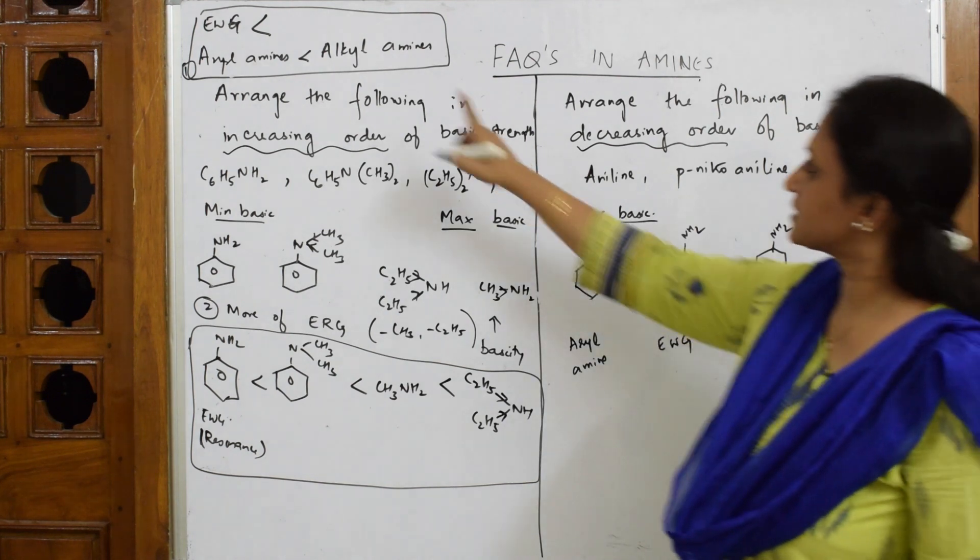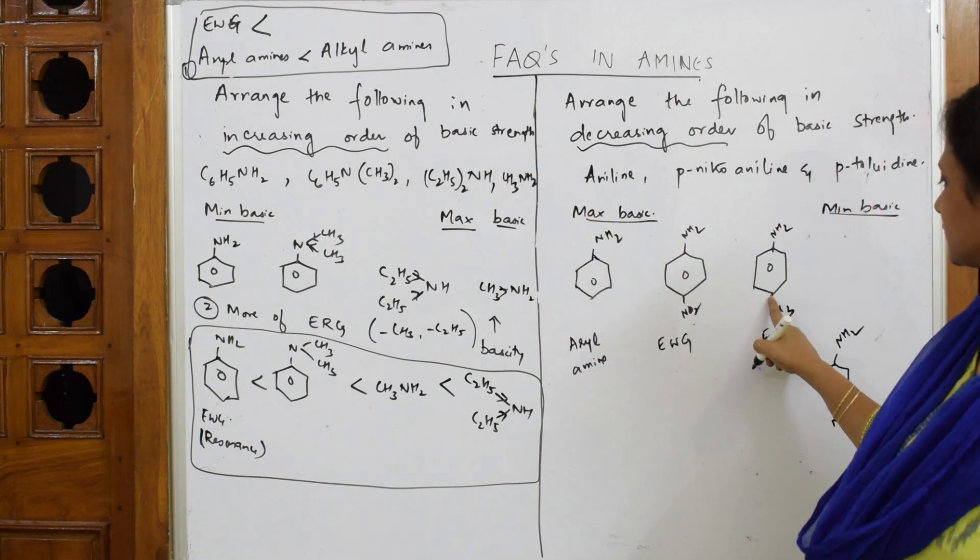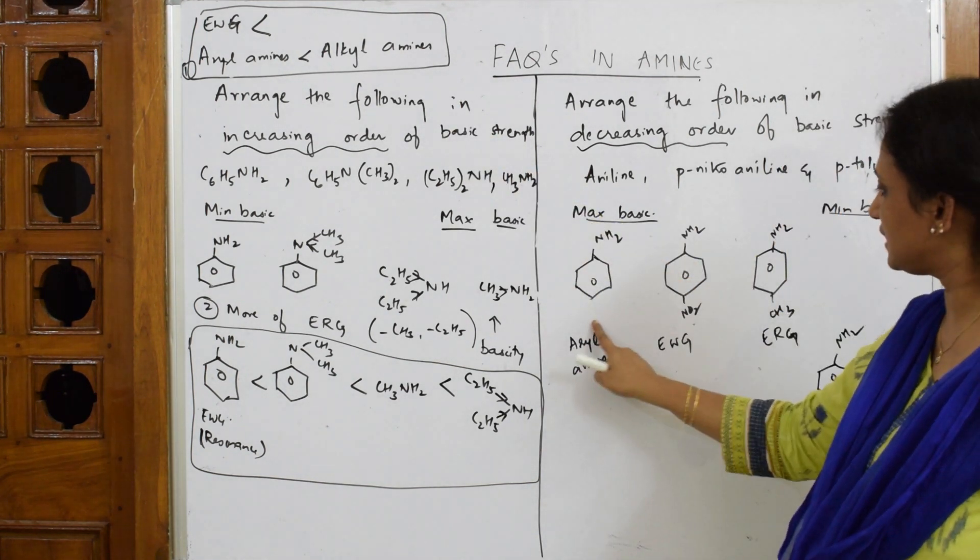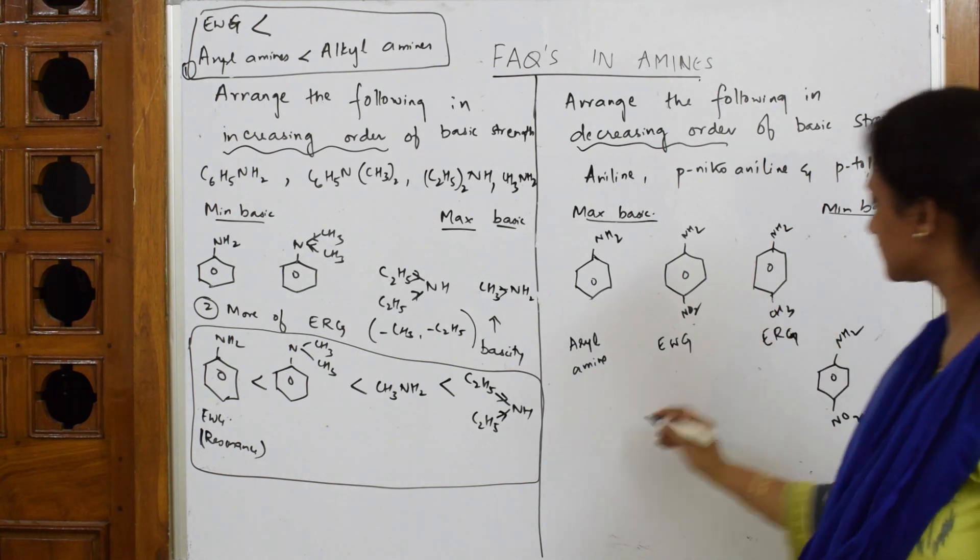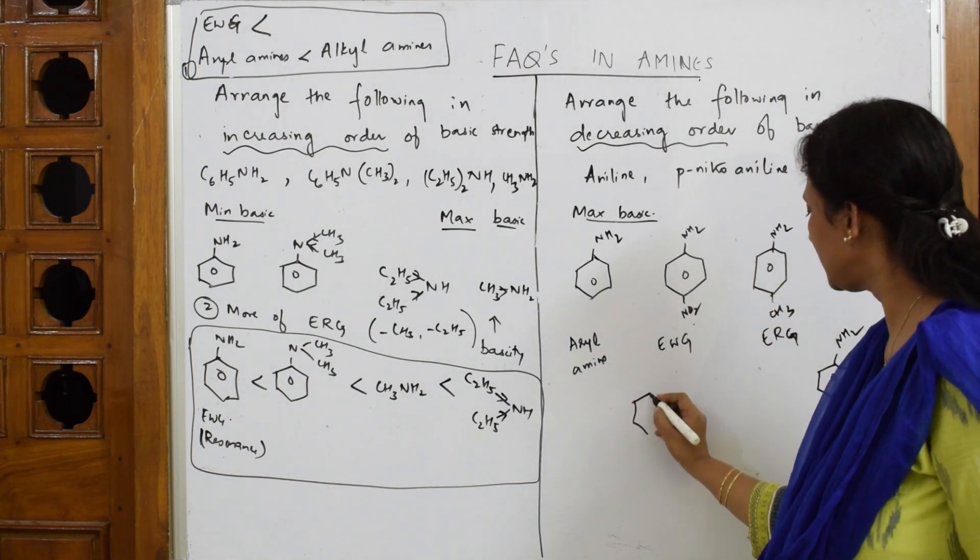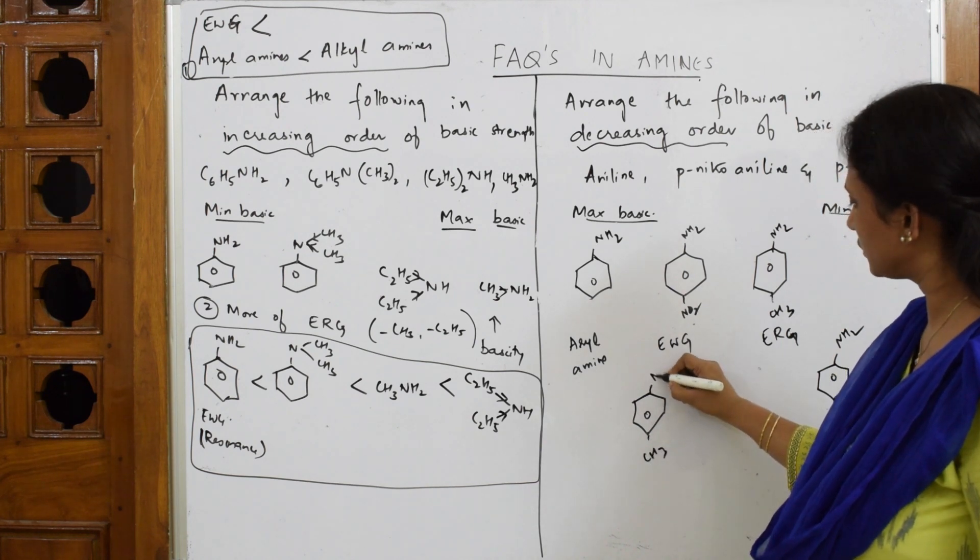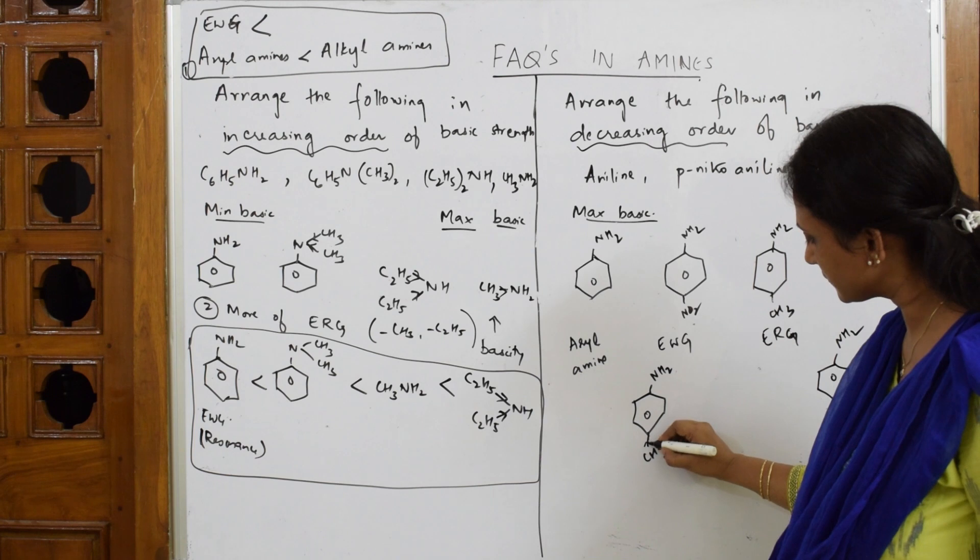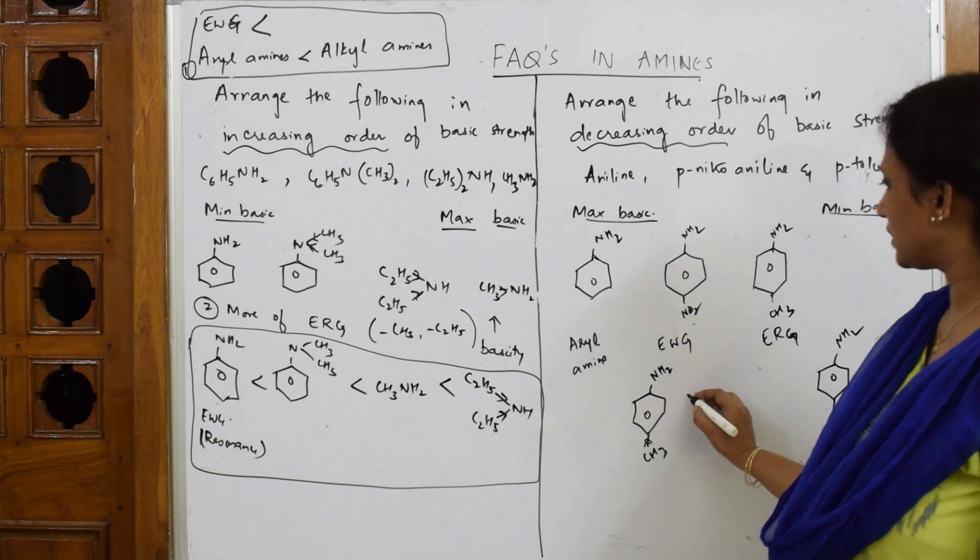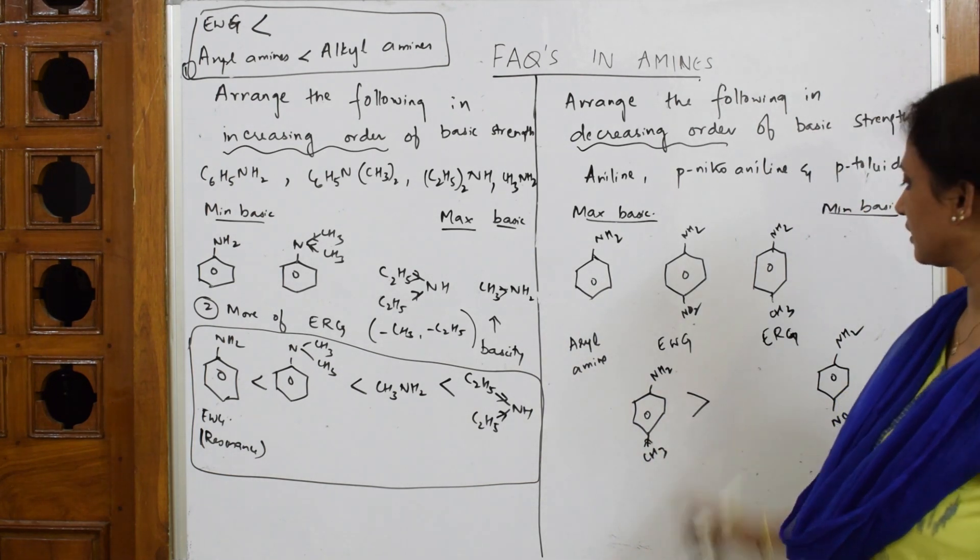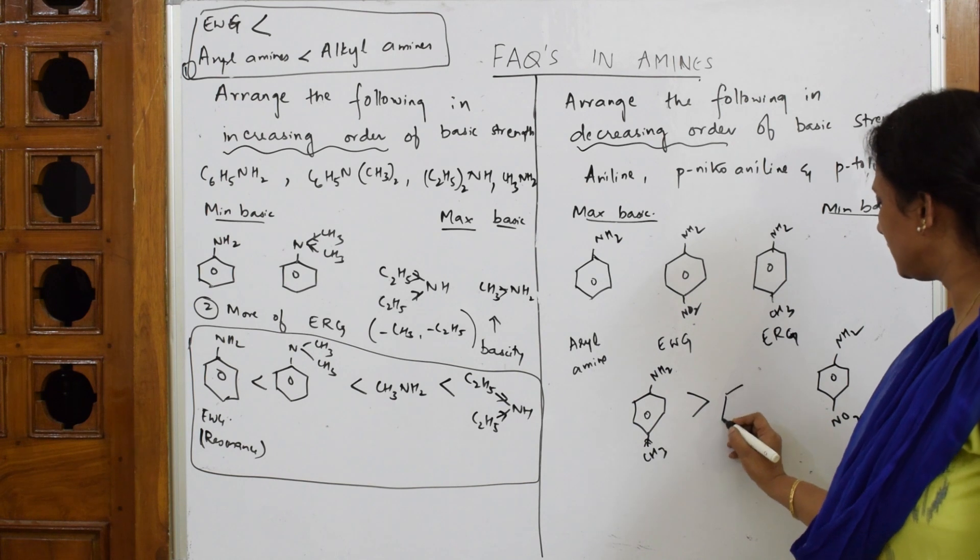isn't it? Toluidine, because of ERG group - it's donating electrons. So I should write with the greater than symbol. The leftover is aniline. This is greater. So I hope you can understand the reason. You can write the reason here.